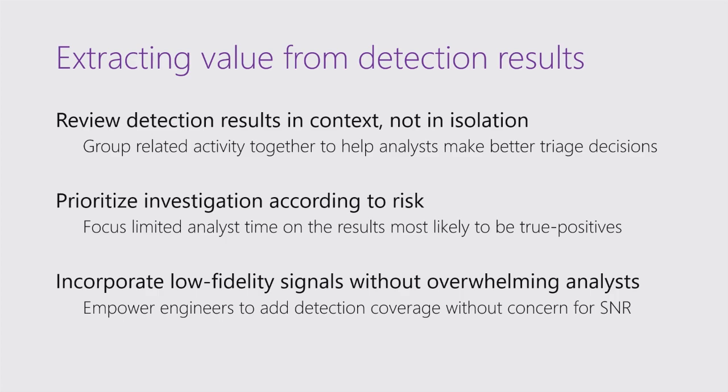My analyst time is scarce. I have hundreds of thousands of detection results coming out each day, generated from between 14 and 20 terabytes of security event logs and ETW telemetry every day. I need analysts looking at the thing most likely to be a true positive when they start. Finally, I want to turn my engineers loose to add as many detections as possible — but if they're handicapped by the false positive to true positive ratio, I'll only be able to add a small number of detections unless I have some way to link these together without overwhelming my analysts.